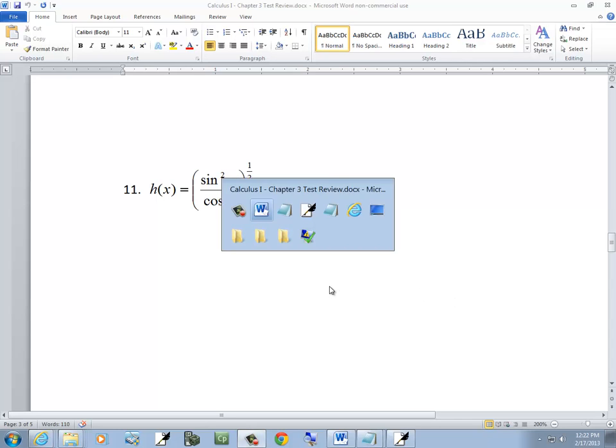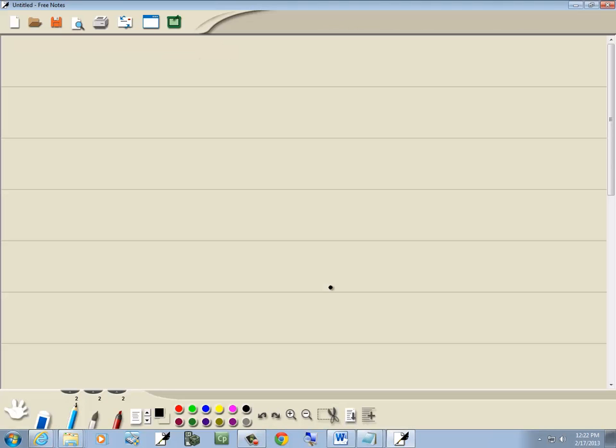Let's take a look at our 11th example. We've got h of x is equal to sine squared x over cosine x to the 1 half power.